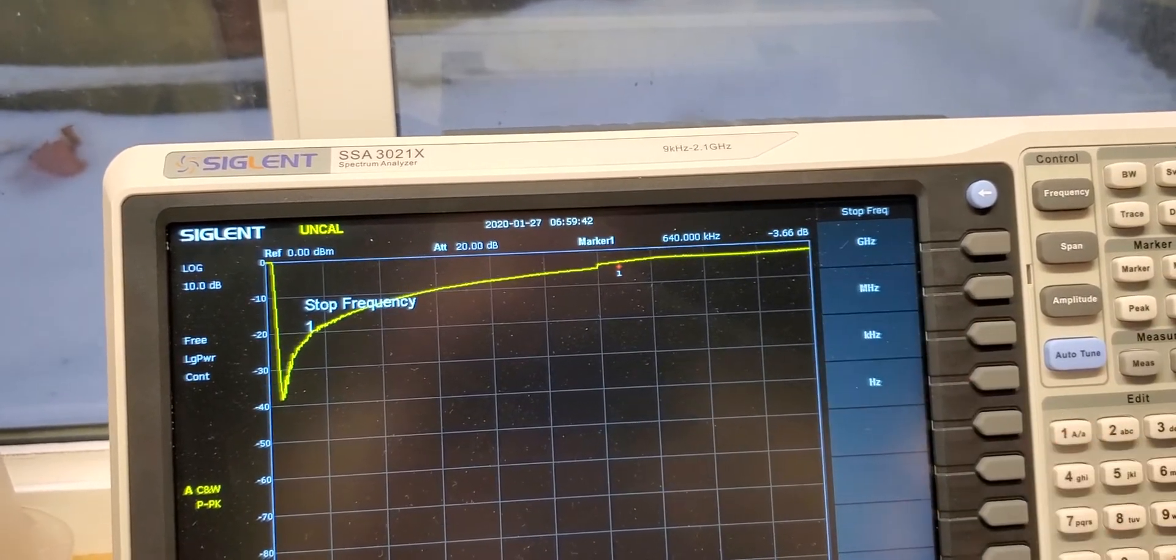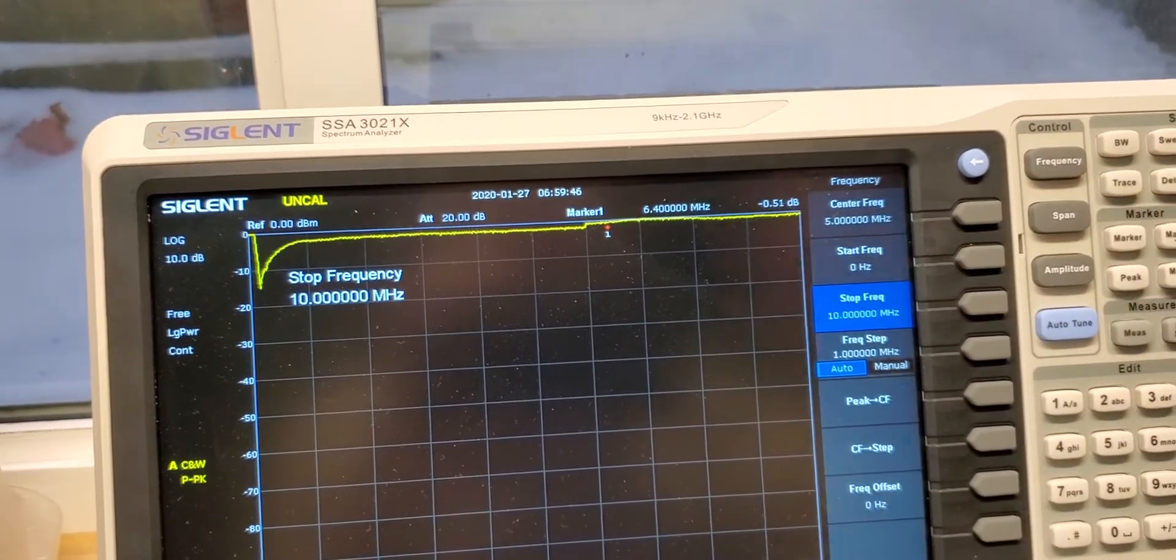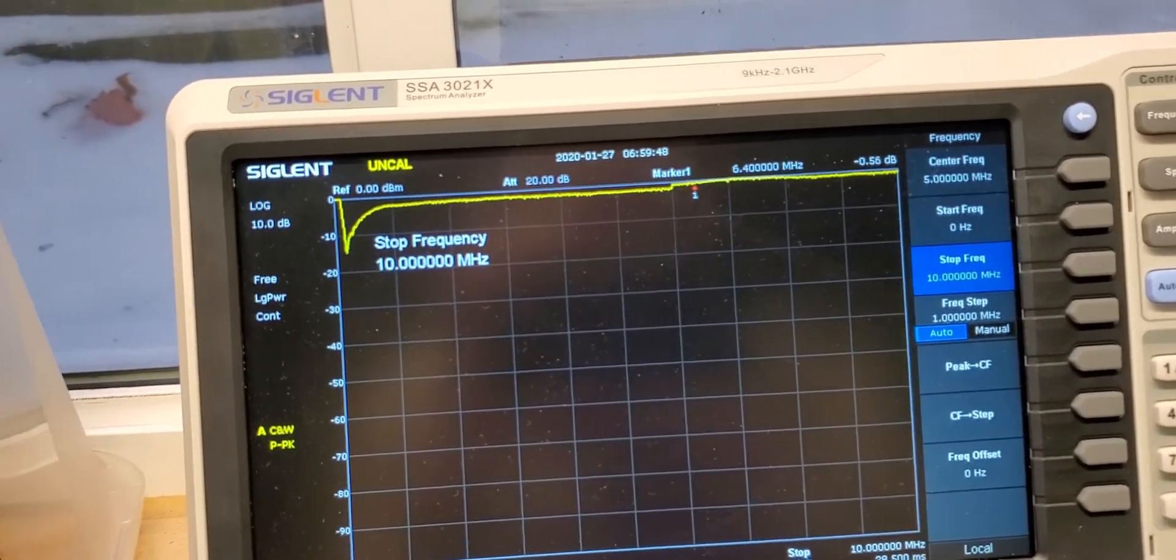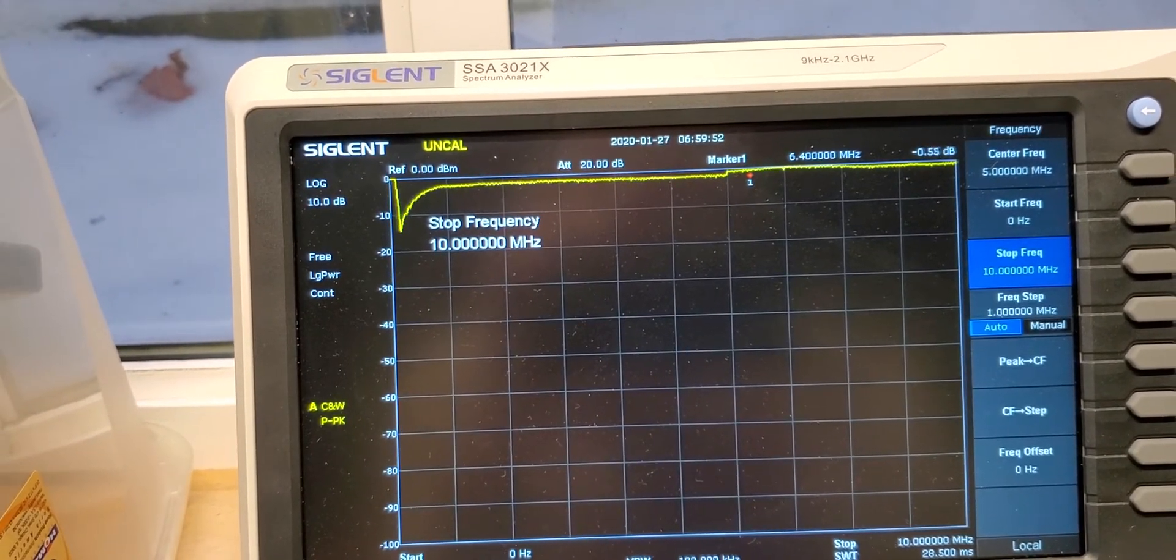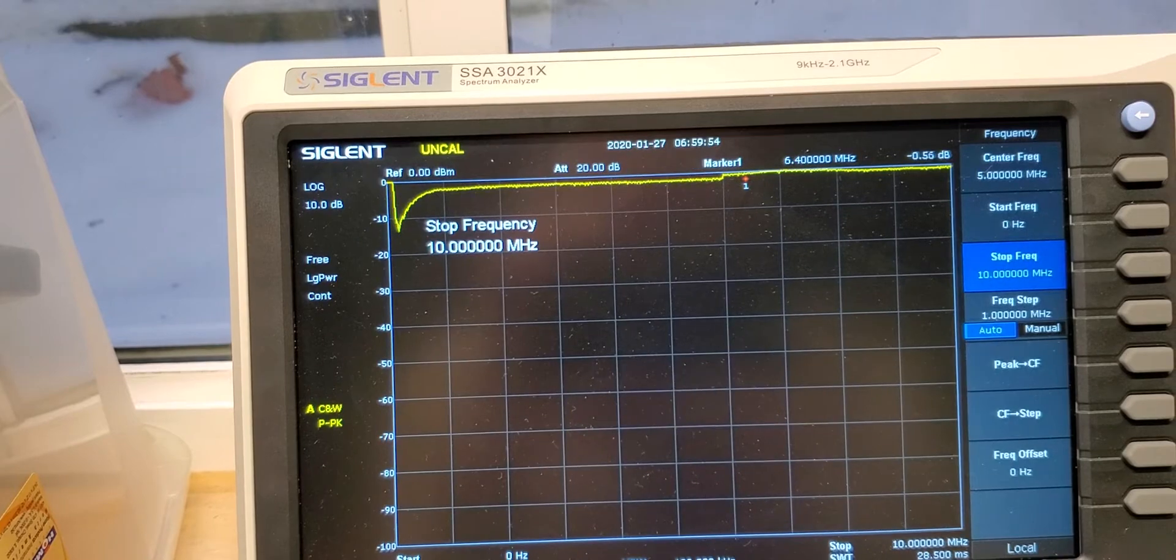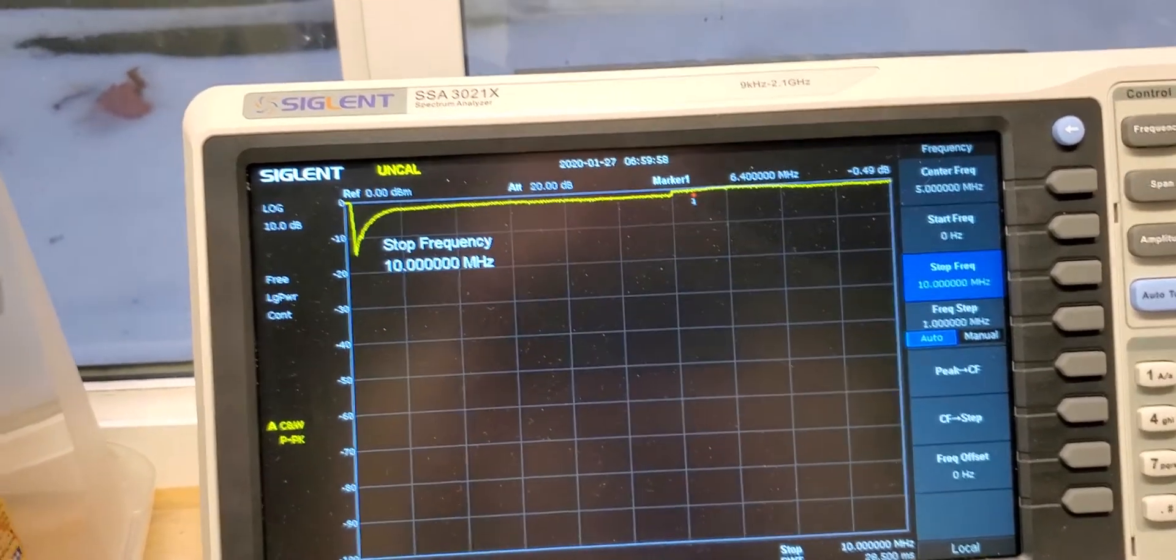So if you zoom out a little bit more, let's go to 10 megahertz. Right here we see that dip. So the DC block definitely will have an impact on the lower frequencies.